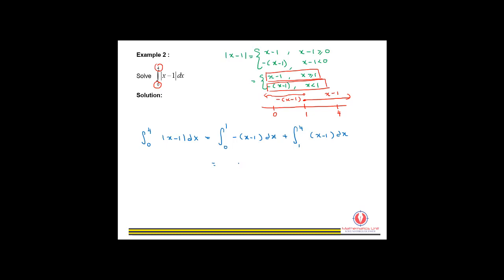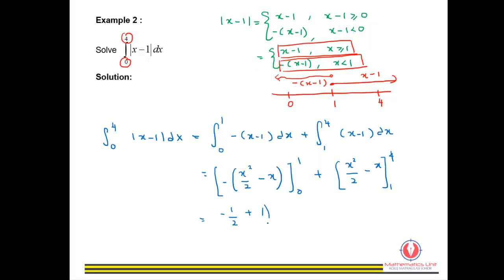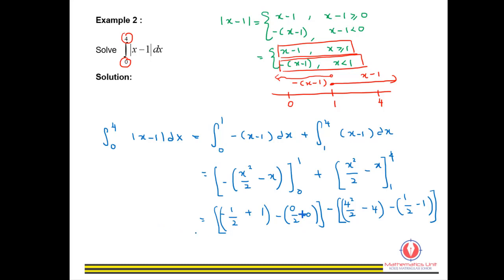We integrate to get x² over 2 minus x, with a negative sign outside, evaluated from 0 to 1, plus x² over 2 minus x from 1 to 4. Then we substitute the limits. By using your calculator, you will get the answer 5. Done.